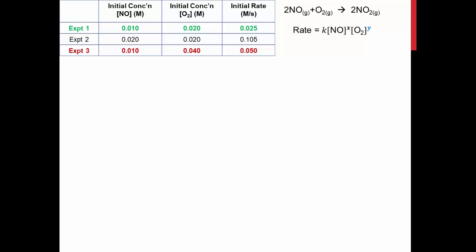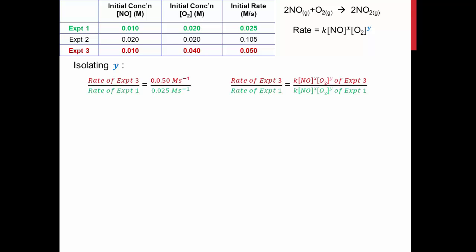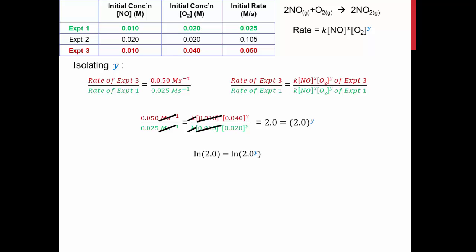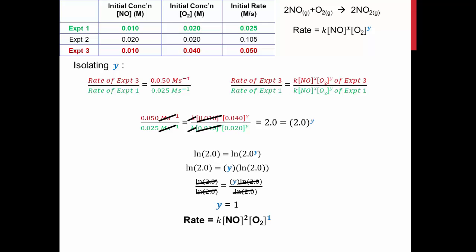Now let's look at O₂. This process is exactly the same except we compare experiments 1 and 3. We take our rates from the table, fill them into our expression, and perform canceling. After canceling units, the constant K, and the concentration of NO — which is the same in both experiments — we're left with 2 equals 2 to the power of Y. Using ln to isolate Y: we bring Y to the front and divide both sides by ln(2), giving Y equals 1. So oxygen is first order, and we replace Y with 1 in our rate law expression.